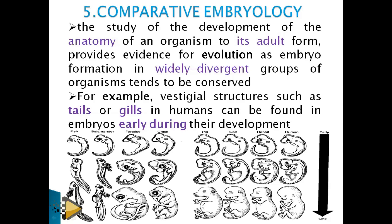Vestigial structures — structures that once had a function but no longer do — provide further evidence. The tail and gills are examples: they are present in human embryos during early development but disappear or are modified. Since human embryos resemble chicken, tortoise, salamander, and fish embryos, it shows all these organisms shared a common ancestor.